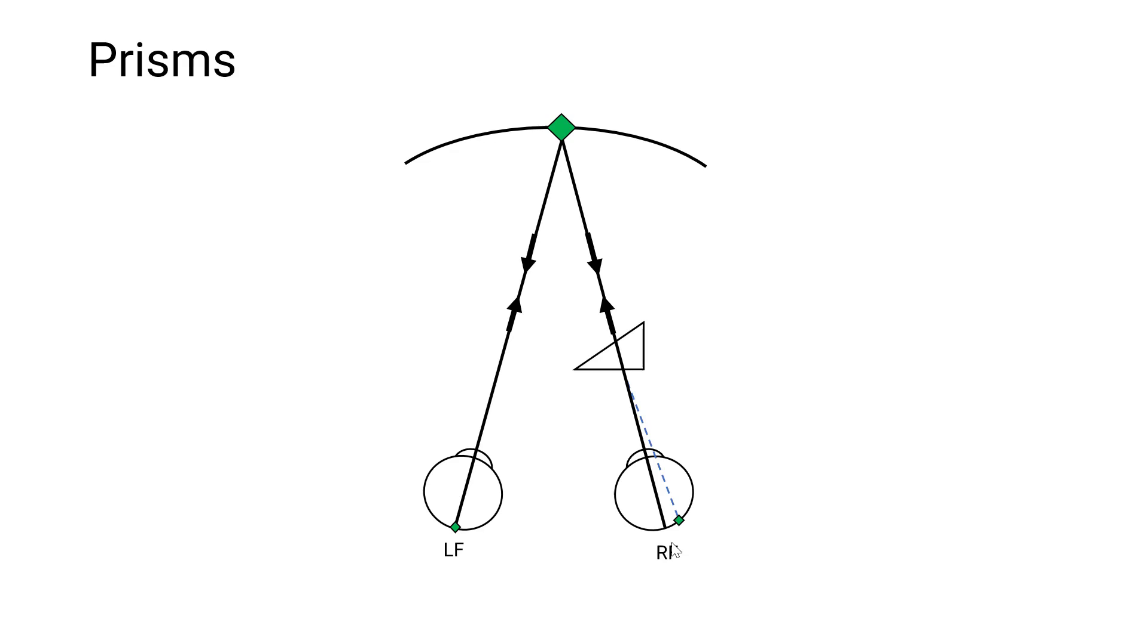What does this look like? We will see the eye move inwards to overcome it. Remember the fovea was here. By shifting the eye inwards, the fovea will actually come to the point of where the light has shifted. And this movement will be equivalent to the prism that we place in front of the eye. So if it's a 10 prism diopter prism, we'll see a 10 diopter movement. If it's a 20, there'll be a 20 diopter movement.